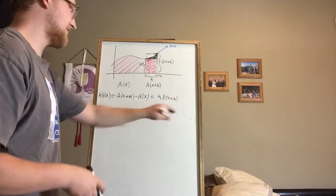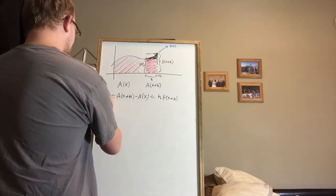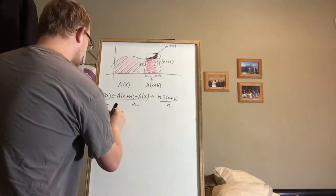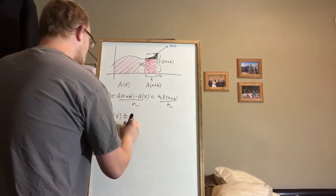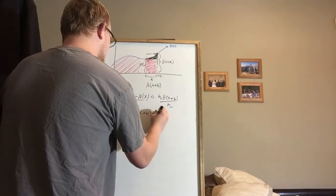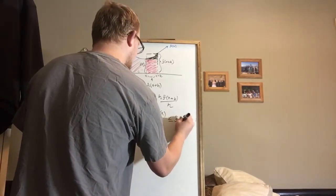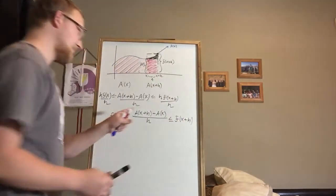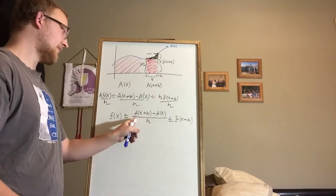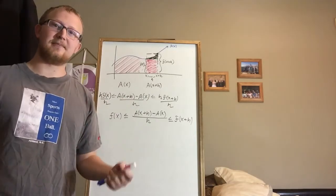Now we have this inequality, and here comes the fun part: we're going to divide everything by h. Dividing every term by h, we end up with: f(x) ≤ [A(x + h) − A(x)] / h ≤ f(x + h). You'll start to recognize this — the middle term matches the definition of a derivative: [f(x + h) − f(x)] / h. Now we just need to take the limit as h approaches 0.